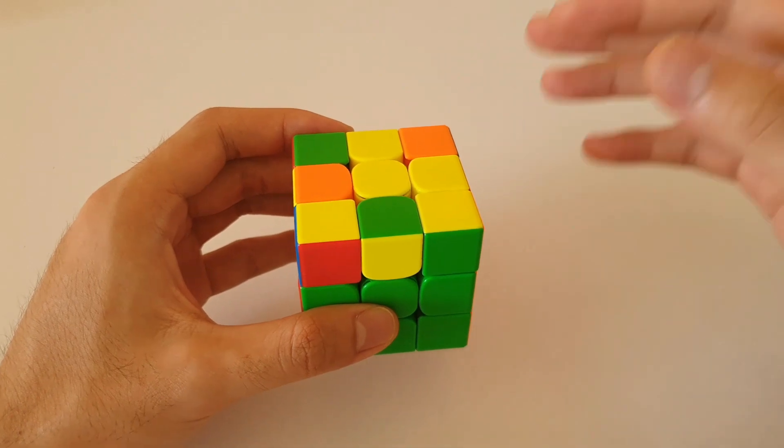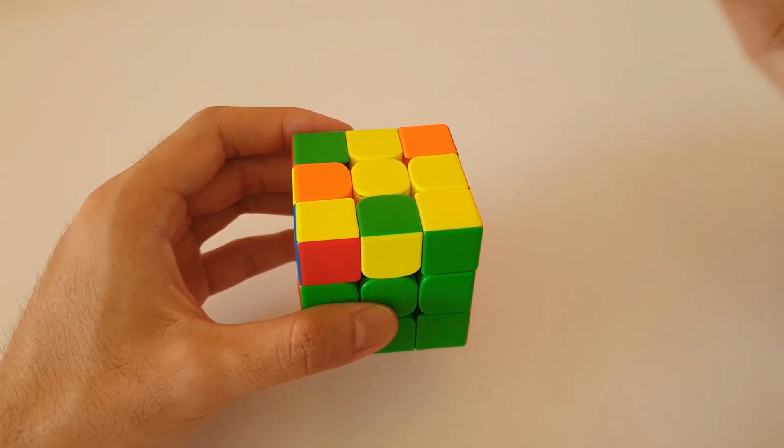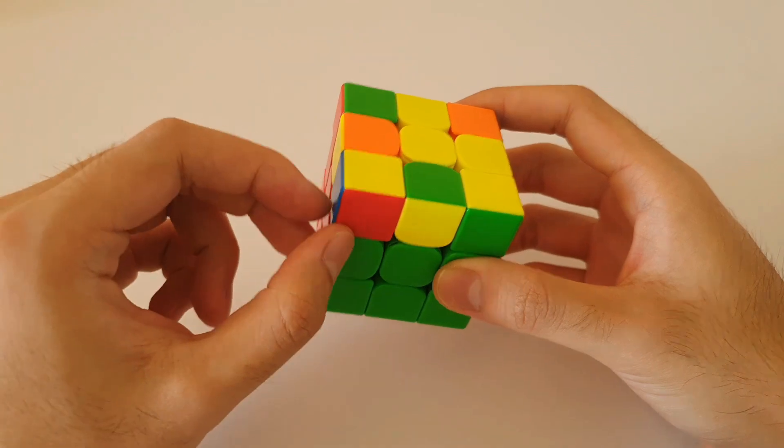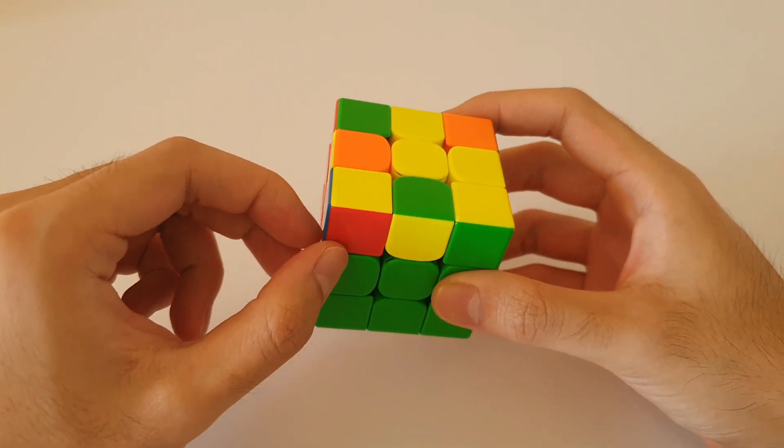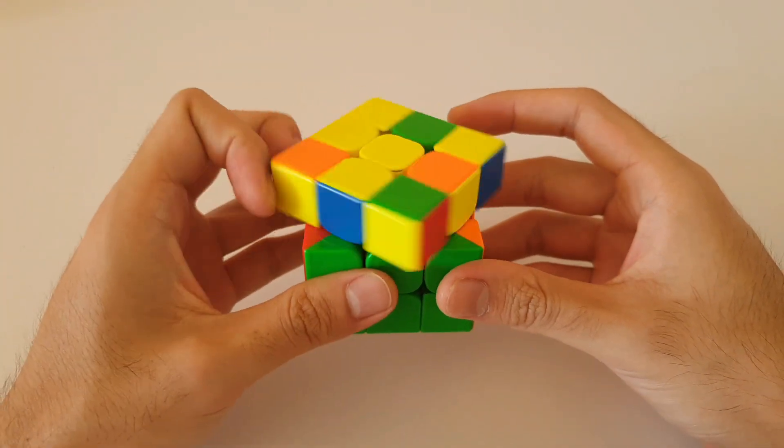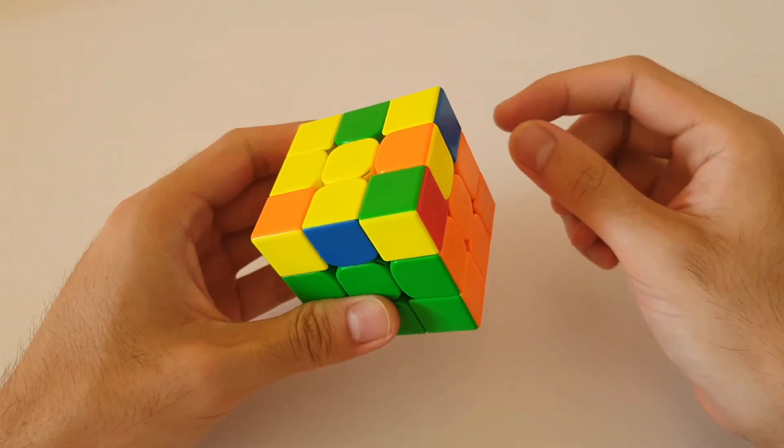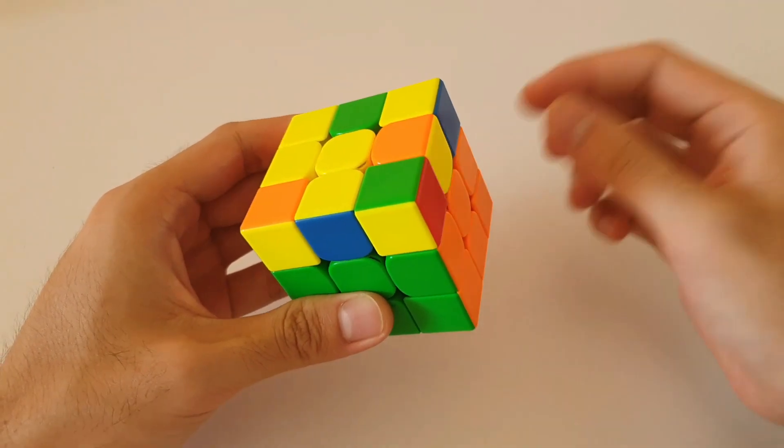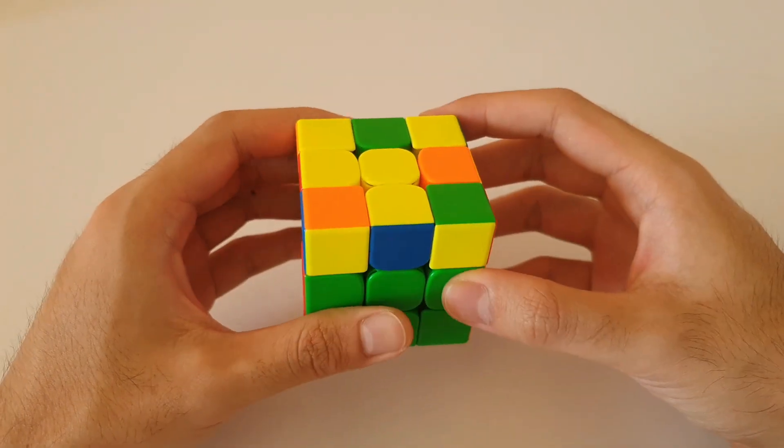However, for this case, I highly recommend an alternative algorithm. Instead of doing the sune with your left hand using the front left pair, we can actually do a U2. And from here, we can do what's called a back sune, as the name suggests, from the back angle with our right hand.